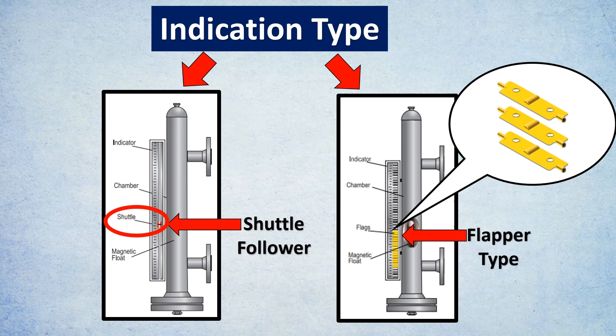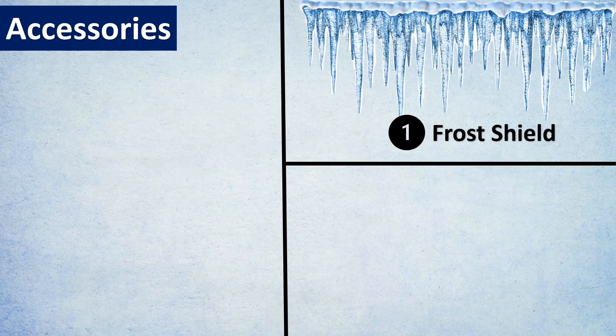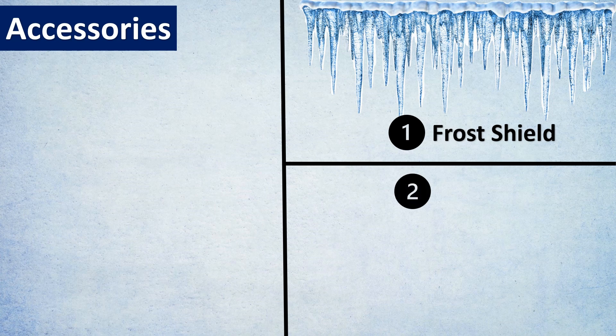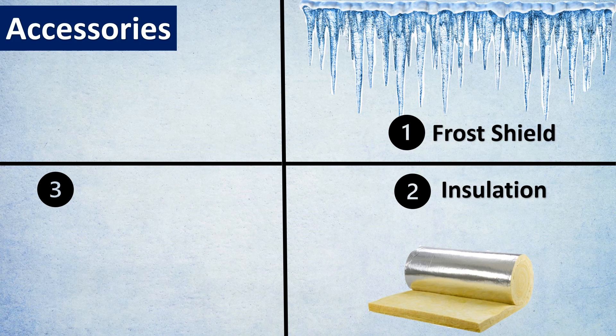The next thing is the accessories required with magnetic level gauges. For example, if you're using a magnetic level gauge with any cryogenic services, you might require a frost shield. Second, for high temperatures you might require insulation, especially it is better if the vendor does the insulation so they will be able to take care of all the pain points.